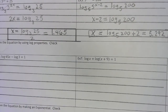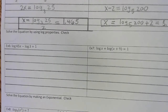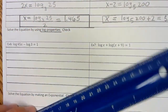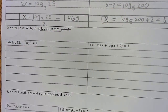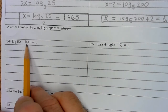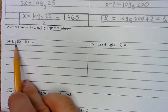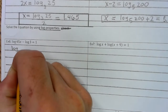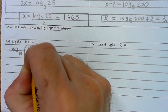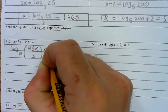Now let's take a look at Example 6: solve the equation by using log properties. We're not going to worry about checking. Since we're subtracting, that becomes division. If there's no base written, we assume it's base 10. So this is going to be log base 10 of 45x divided by 3, equals 1.